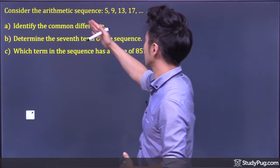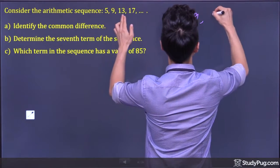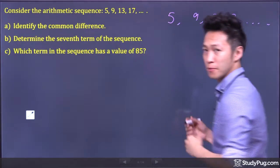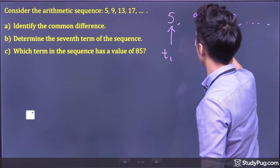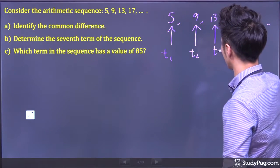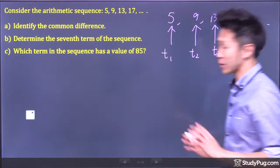Consider the arithmetic sequence: 5, 9, 13, 17, and onwards. So in this case, the 5 is our first term, the 9 is our second term, the 13 is our third term, the 17 is our fourth term, and so on and so forth.